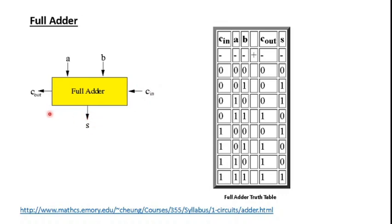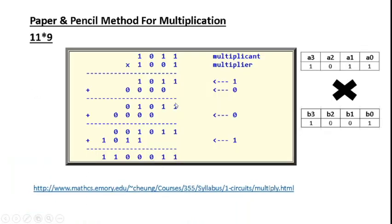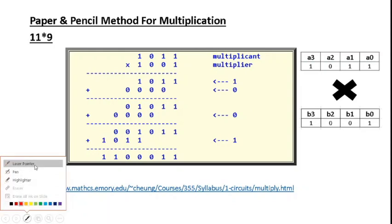Two input bits are taken along with an input bit from a previous full adder stage or from some other circuit, and a single output bit is generated along with a single output carry bit. This shows the full adder circuit truth table, where A and B are input bits, Cin is carry input, and Cout is carry output. If you carefully observe, the full adder addition is essentially an XOR operation.